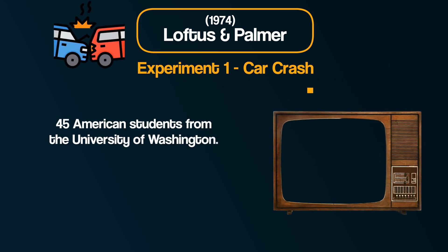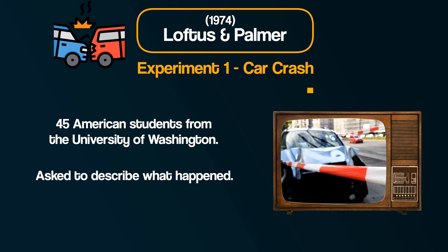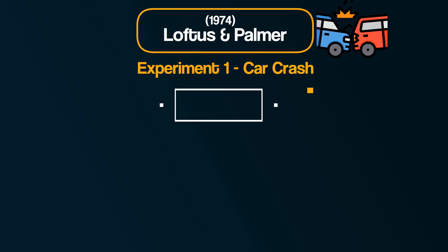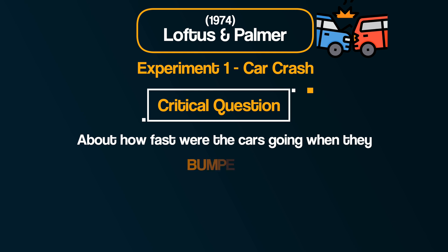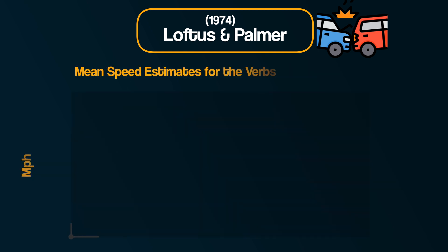One of her studies back in 1974 with fellow psychologist John Palmer explored the impact of the way that language used in questions could alter memory. In their first experiment, 45 American students from the University of Washington saw a series of films containing traffic accidents. They were then asked to describe what had happened, like an eyewitness, and also asked some more specific questions. The critical question was about how fast the cars were going when they 'bumped into' each other, with five versions of the verb ranging from 'contacted' to 'smashed.' You can see how the words vary in the level of intensity they suggest about the crash.